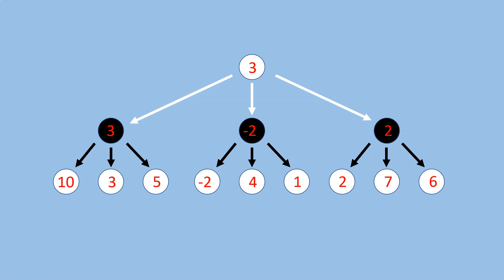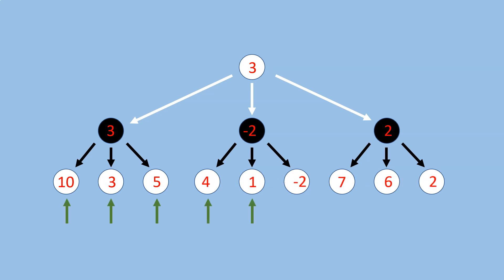If you've been paying close attention, you might ask what if the moves were ordered differently. Indeed, if black's responses to white's second and third move were ordered from worst to best, we would not be able to prune that many branches. For this reason it's very important to order the moves from best to worst. This largely depends on the evaluation function as well.